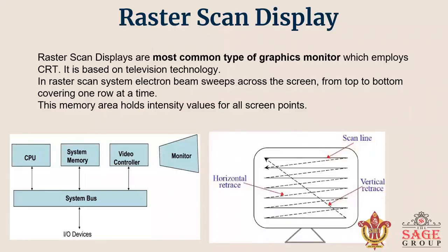This is the basic working of raster scan display. Raster scan displays are the most common type of graphics monitor, which employ CRT — that means cathode ray tube. It is based on television technology.